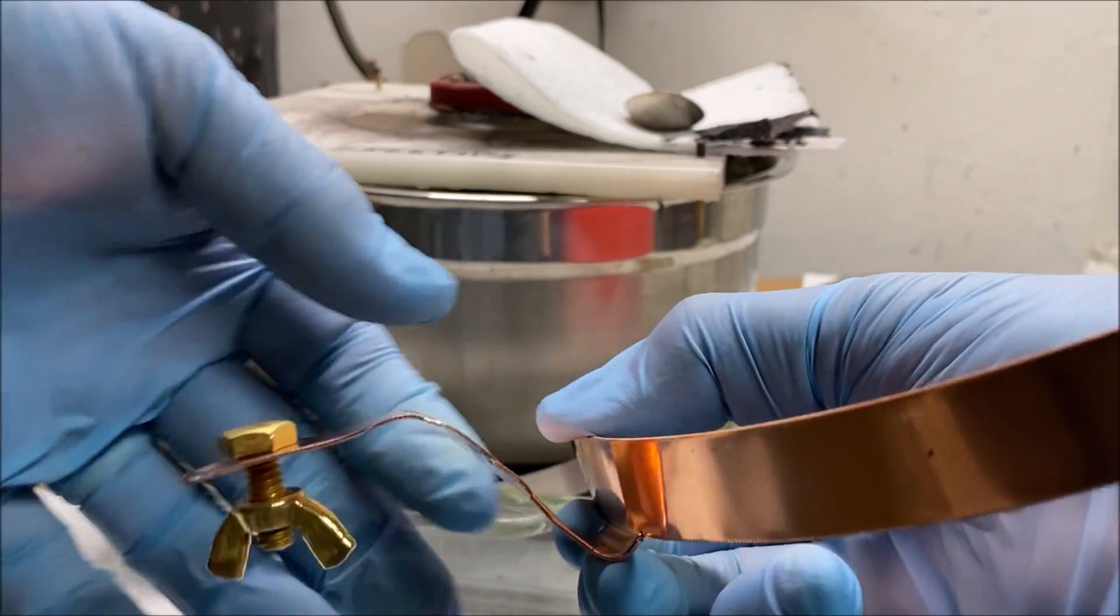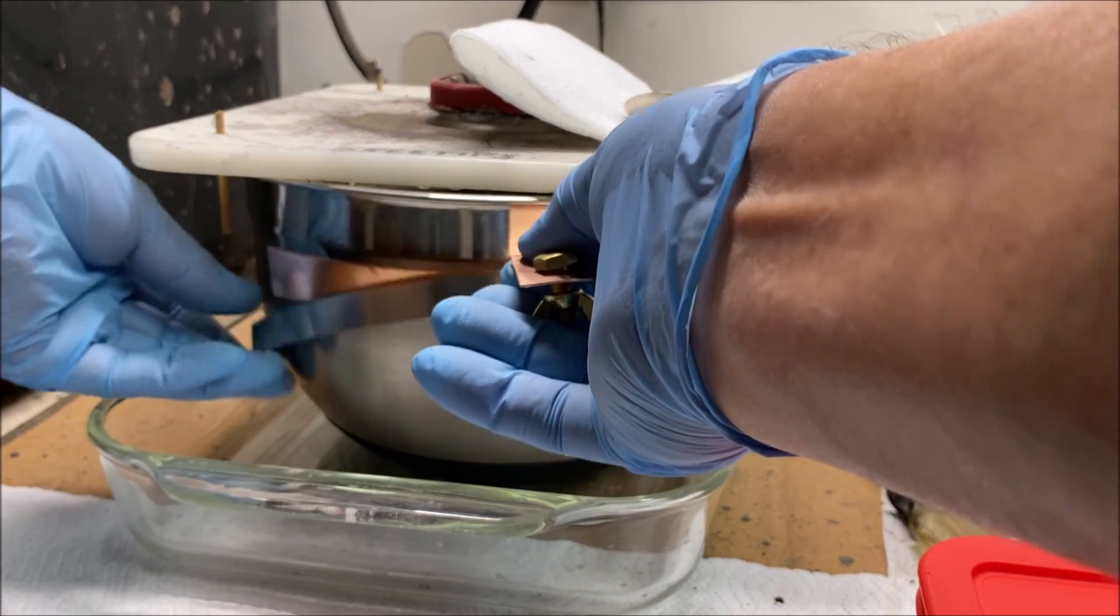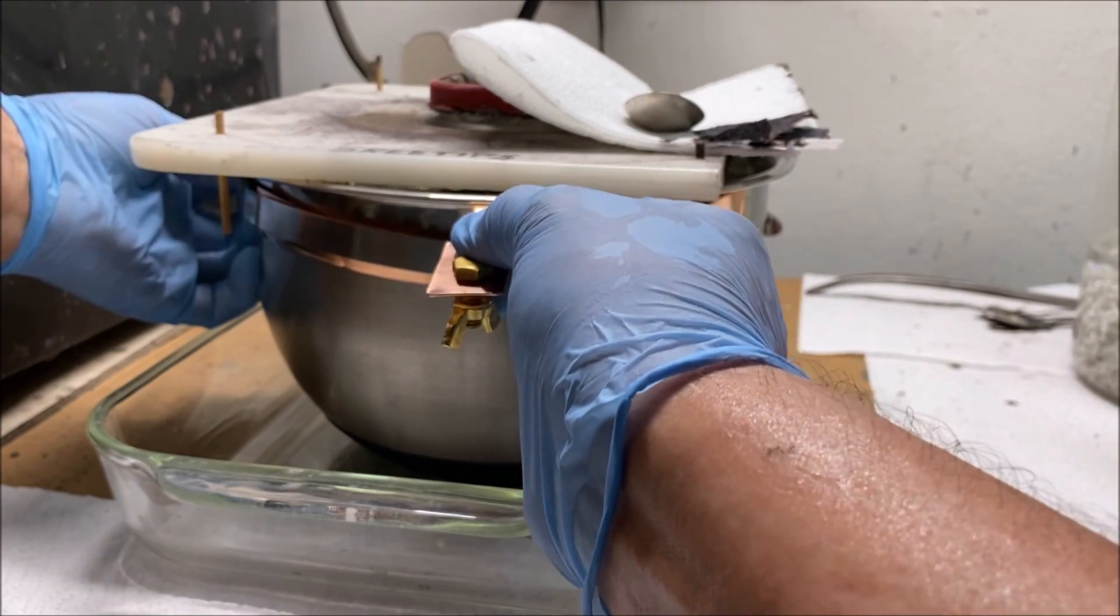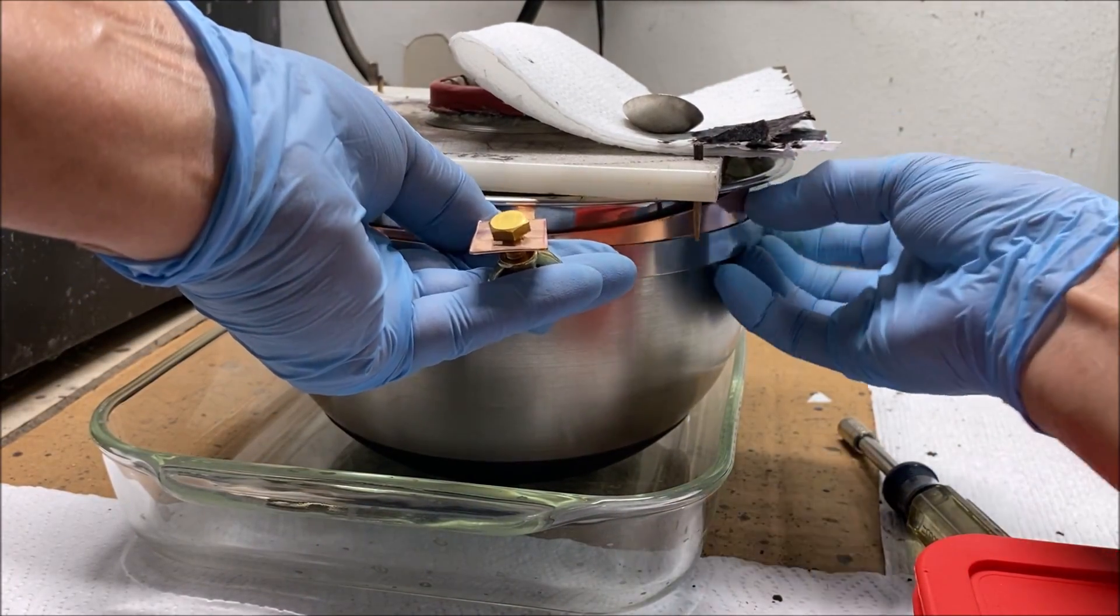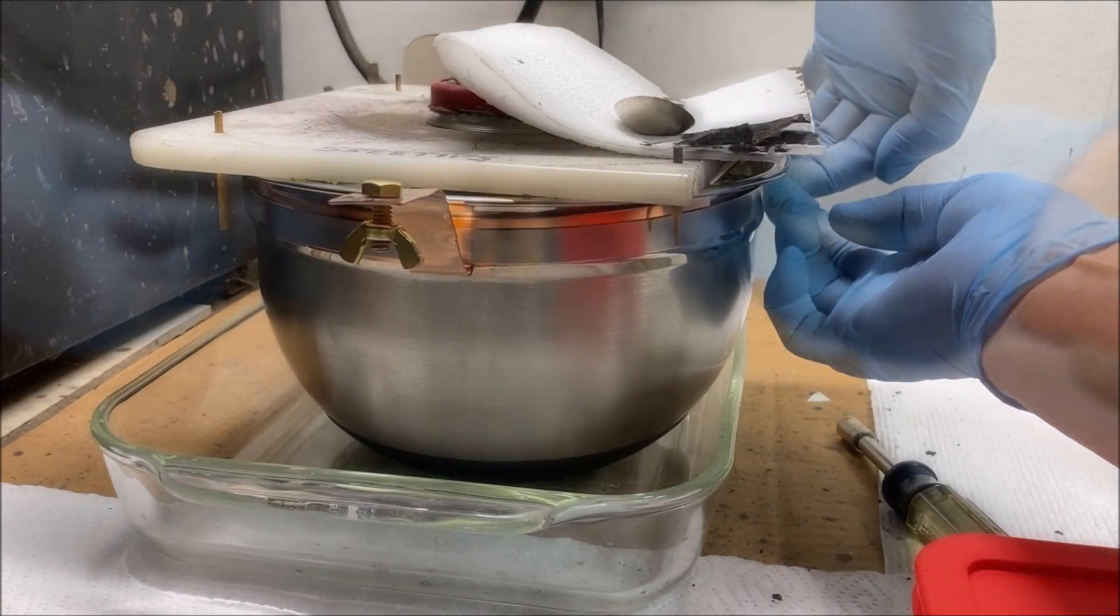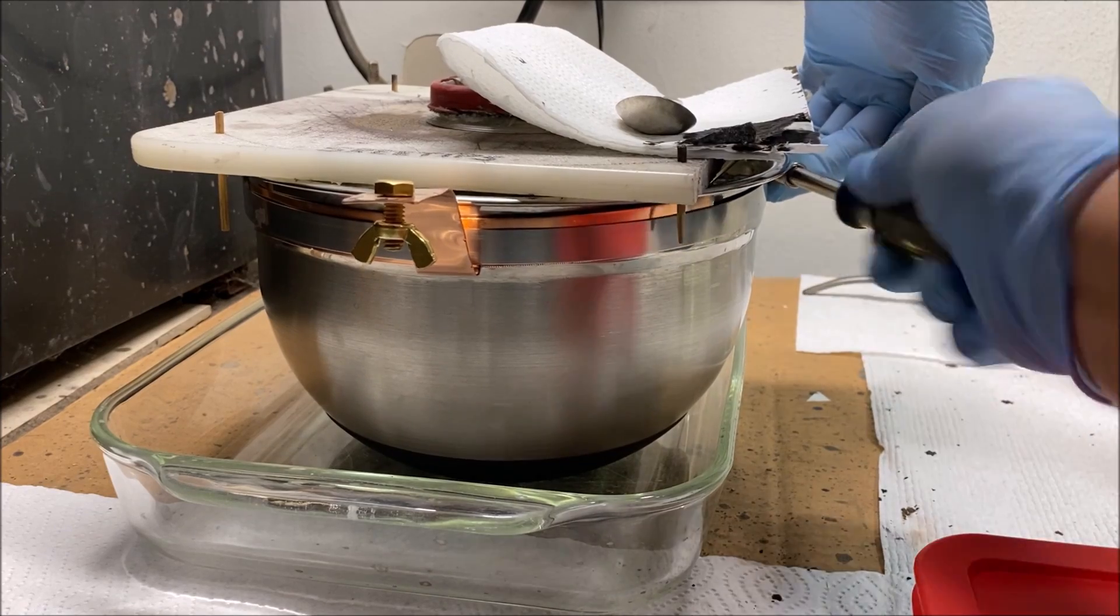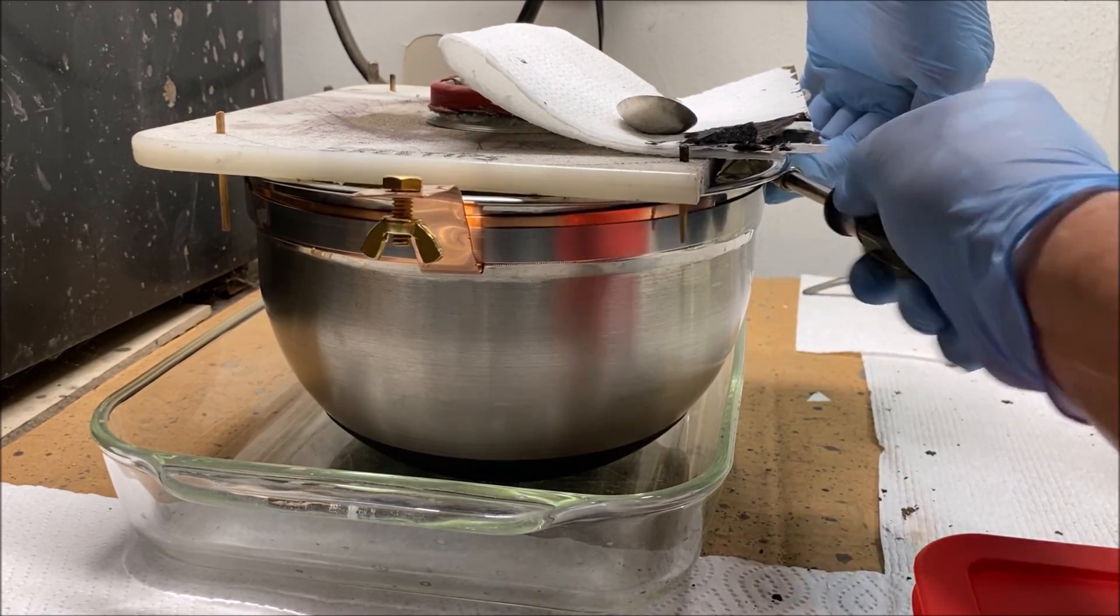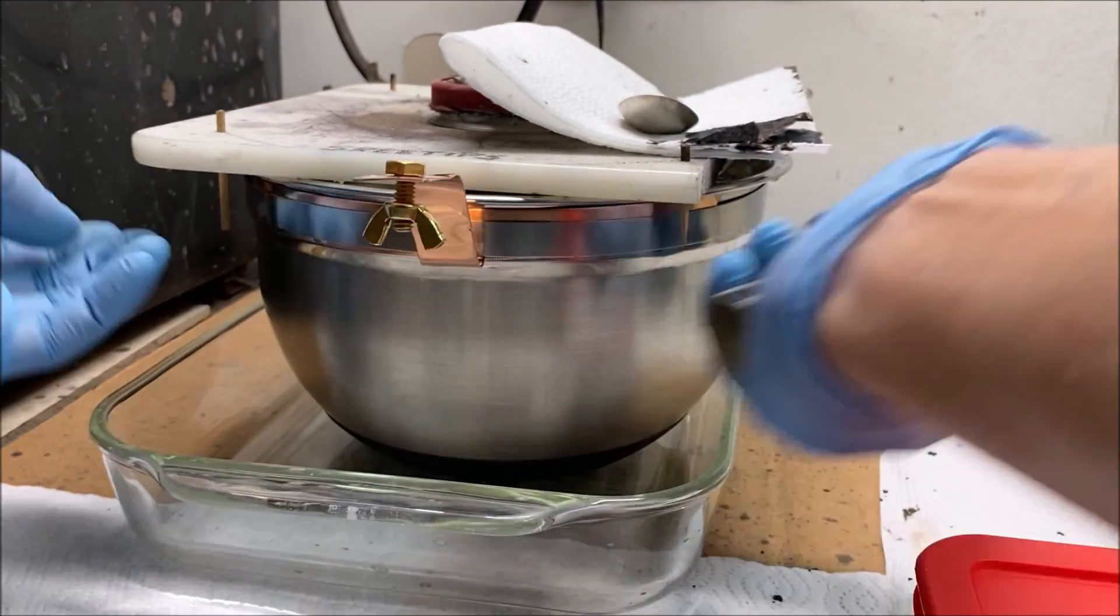What we'll do is slip this underneath the clamp here. Now I'll just slowly tighten this screw until I get the clamp tight to hold the copper strap tightly to the bowl.